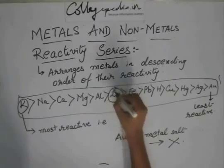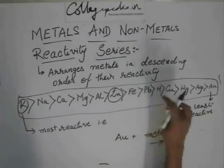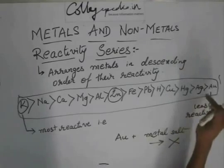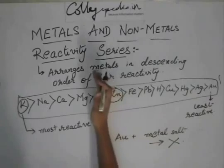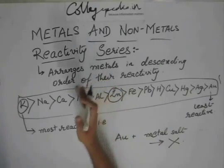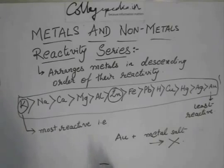It means that zinc can displace iron, lead, hydrogen, copper, mercury, silver, gold from the salt solutions. But it cannot displace aluminum, magnesium, calcium, sodium, and potassium from their salt solutions.